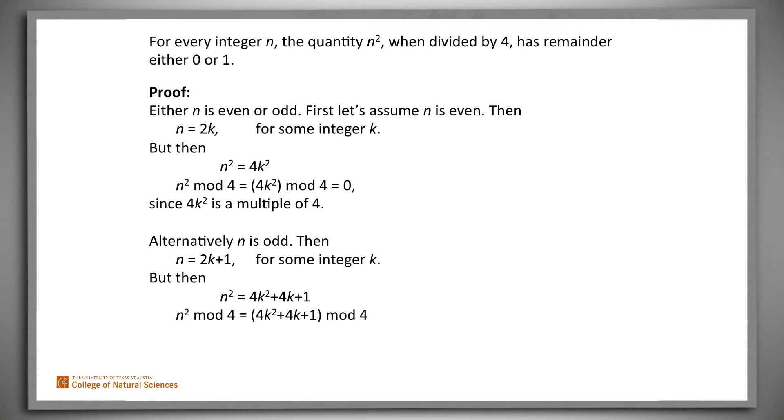But that equals 1 since 4 times the quantity k squared plus k is 1 more than a multiple of 4. So n squared mod 4 is either 0 or 1.